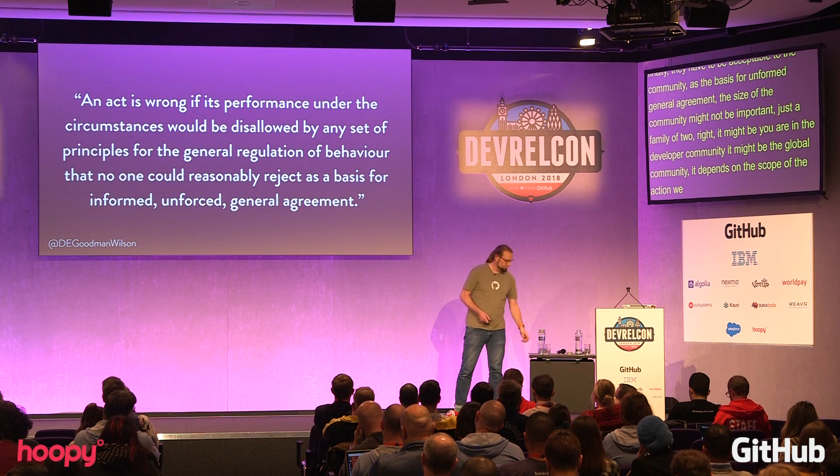The kinds of principles that could be reasonably rejected are principles that deny the humanness of another, principles that deny the value of a relationship. And they have to be acceptable to the community as the basis for informed, unforced, general agreement. The size of the community is not terribly important — it might just be a family of two, or it might be your developer community, it might be the global community. It depends on the context and the scope of the action and the community we're going to use as the basis for evaluating the justification.